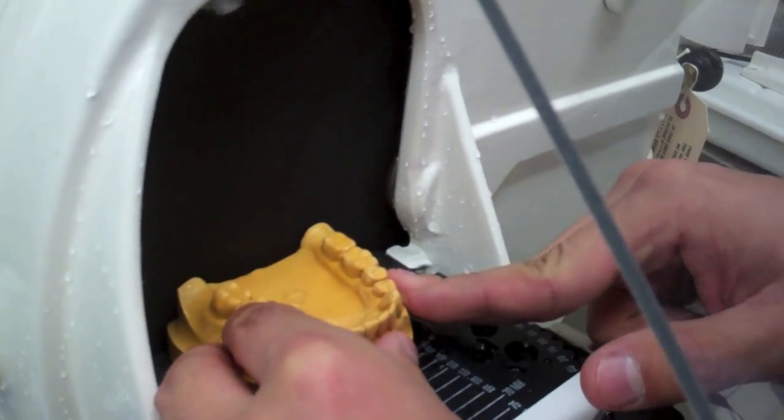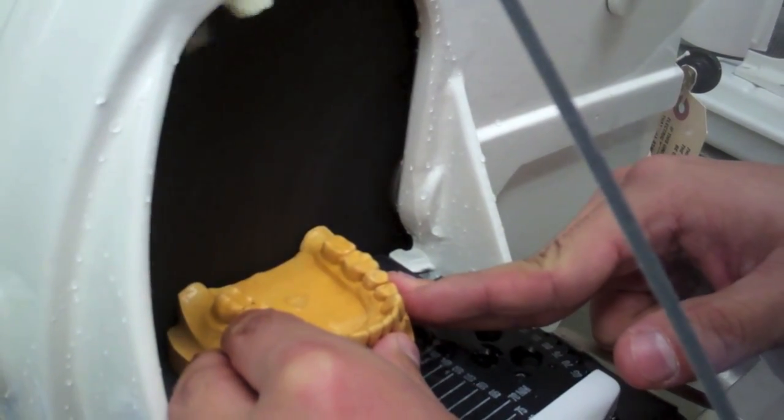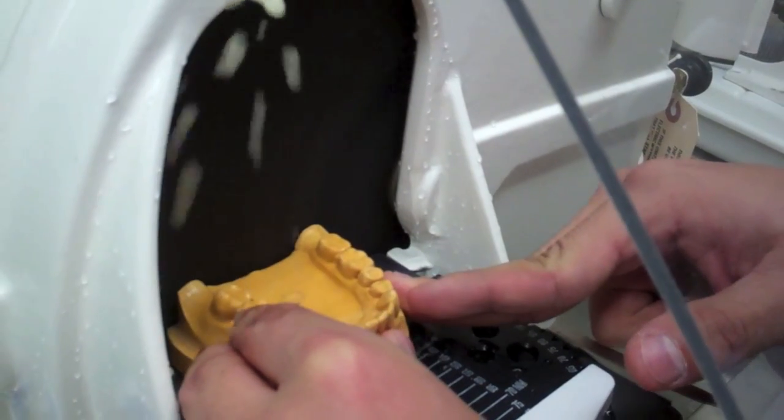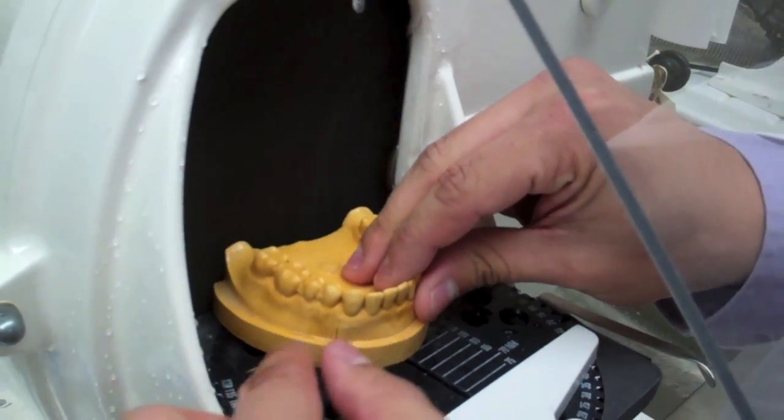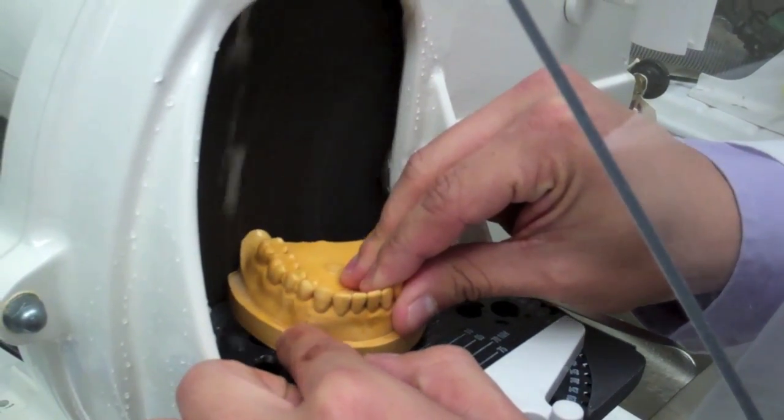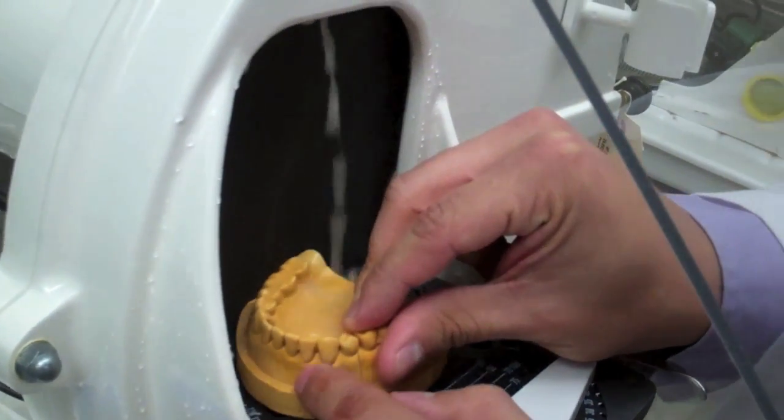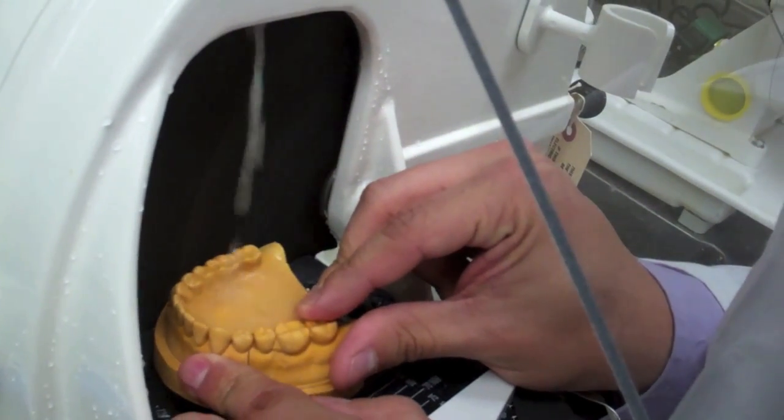When viewing the model occlusally, it is easy to see a preformed line around the land area of the cast. This is where the model should be trimmed to. If trimmed too far and teeth are hit by the trimmer, the model must be re-poured.